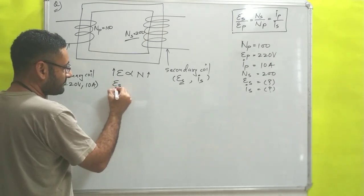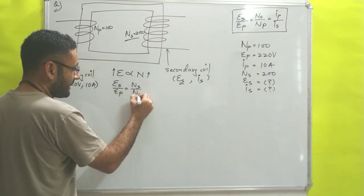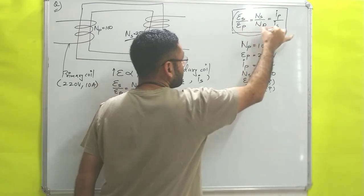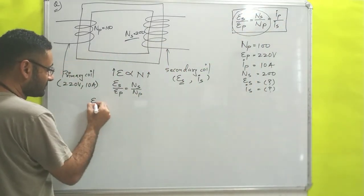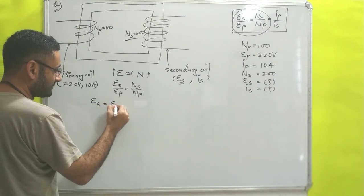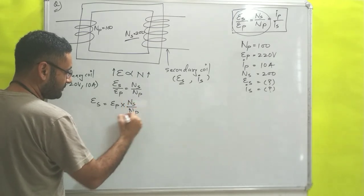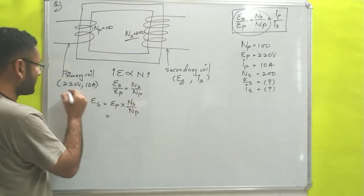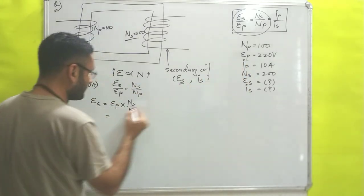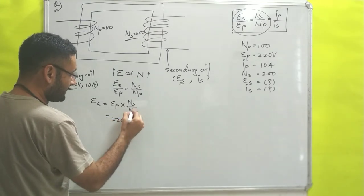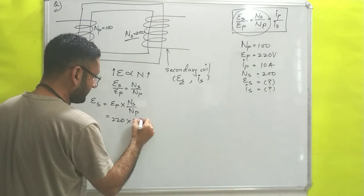We know the equation: ES / EP = NS / NP. We want the potential on the secondary side, so ES = EP × (NS / NP). Primary side potential EP is 220 volts, multiplied by NS = 200.